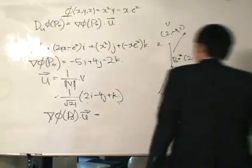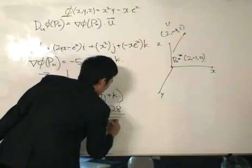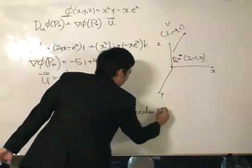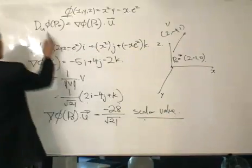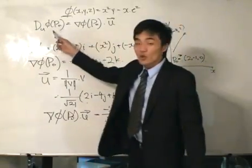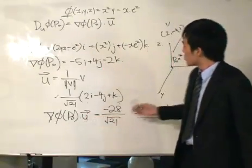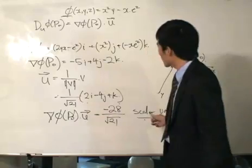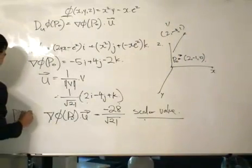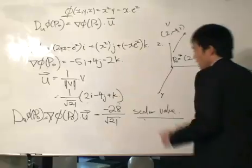Which is minus 28 over root 21. This is a scalar value, because the rate of change of phi evaluated at p-naught in the direction of u is also going to be a scalar value. So, that makes sense. We dot these two vectors together, we get a scalar value because this scalar value gives us the directional derivative. And that is just a short example on how all these things fit together.